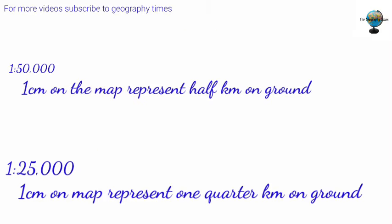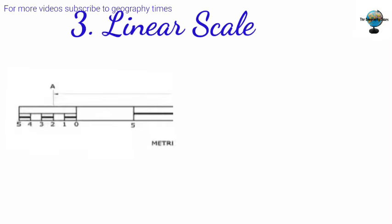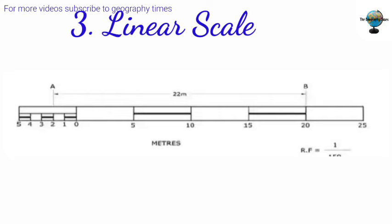The linear scale is a graphic scale, and this type of scale is expressed in line or graph form. It consists of two main parts or components: primary subdivision and secondary subdivision. The primary subdivision is always at the right hand while the secondary subdivision is on the left hand. The primary subdivision is expressed in kilometers while the secondary subdivision is expressed in centimeters or meters.